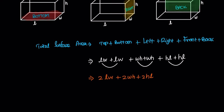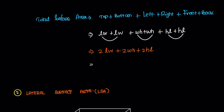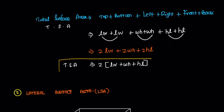The two is common for all terms. So the total surface area is 2 times of (LW plus WH plus HL). This is the total surface area, abbreviated TSA — the total surface area of a cuboid or rectangular prism.